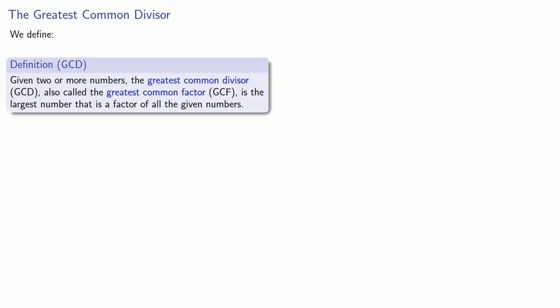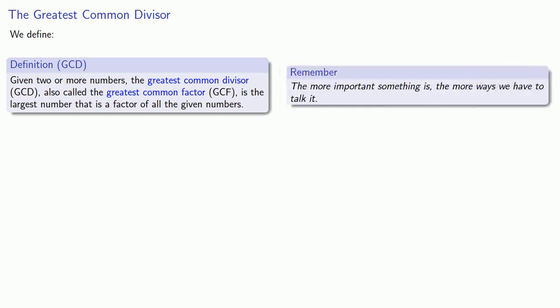And this leads to the following idea. Given 2 or more numbers, the greatest common divisor, GCD, also called the greatest common factor, GCF, is the largest number that is a factor of all the given numbers. And again, we have two different terms for the same thing. And this is a reflection of how important the greatest common divisor or greatest common factor actually is. Remember, the more important something is, the more ways we have to talk about it.